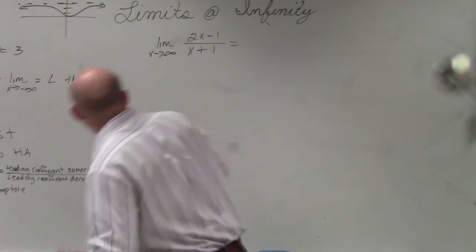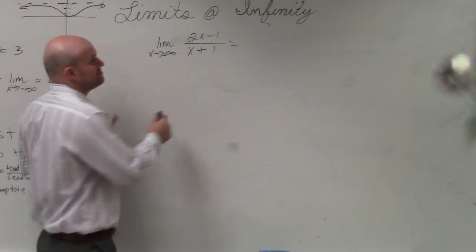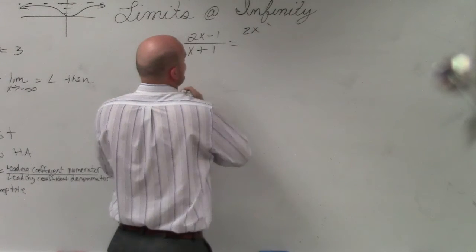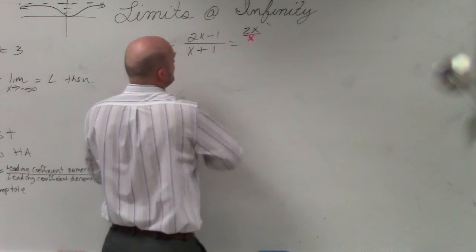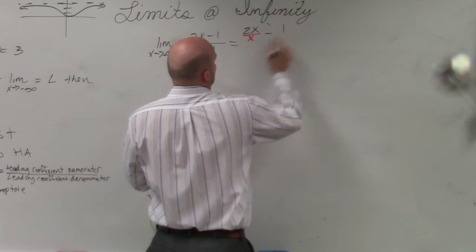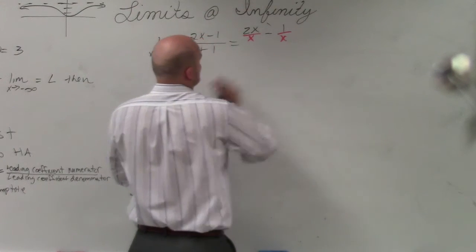So I'll use a different one here so you can see. In our denominator, we have x to the first power. So what I'm going to do is I'm just going to divide every value by x to the first power.